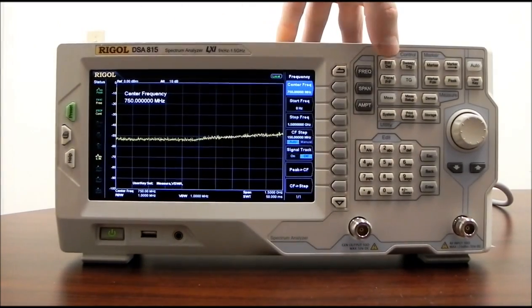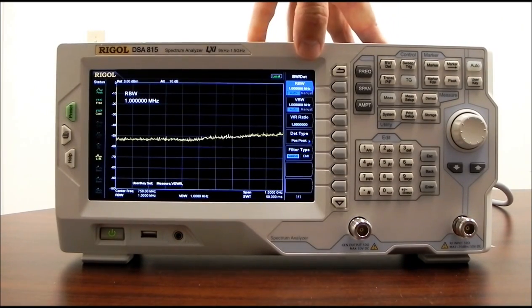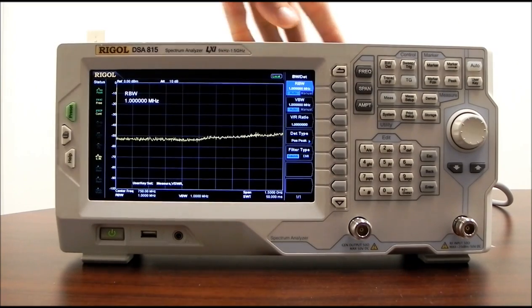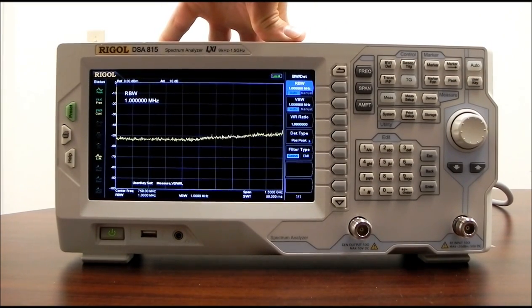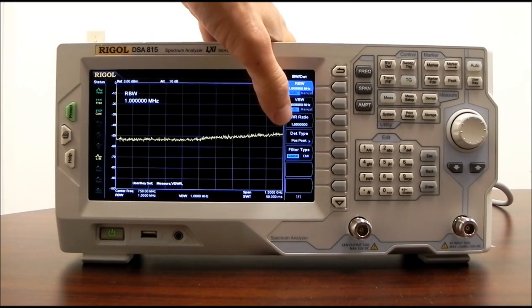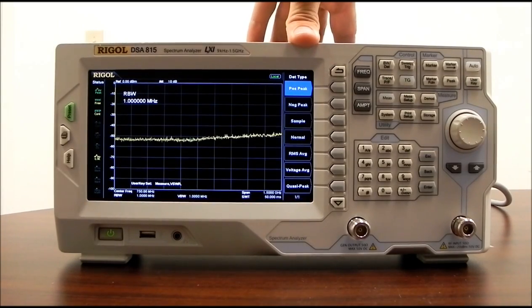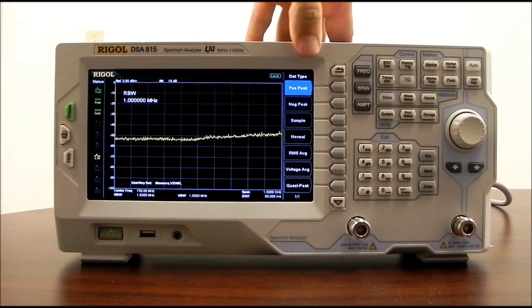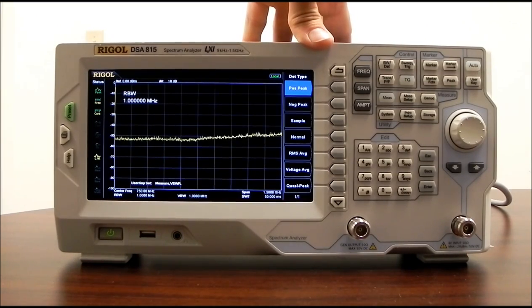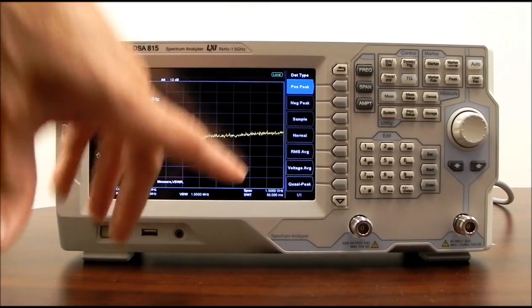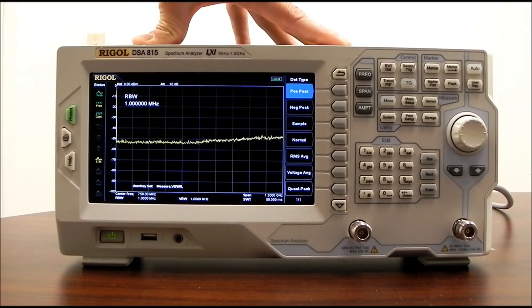Let's take a look at the bandwidth and detector settings for the 815. Press the BWDT button. And you can see we have the resolution bandwidth settings. The minimum resolution bandwidth for the DSA 815 is 100 Hz. We also have video bandwidth settings. V to R ratio that can be set. Detector type. Let's take a quick look through those. Standard detectors are positive peak, negative peak, sample, normal, RMS average, and voltage average. As an option, we do have an EMI toolkit that allows you to have a quasi-peak measurement. That's used typically for EMI and EMC testing.